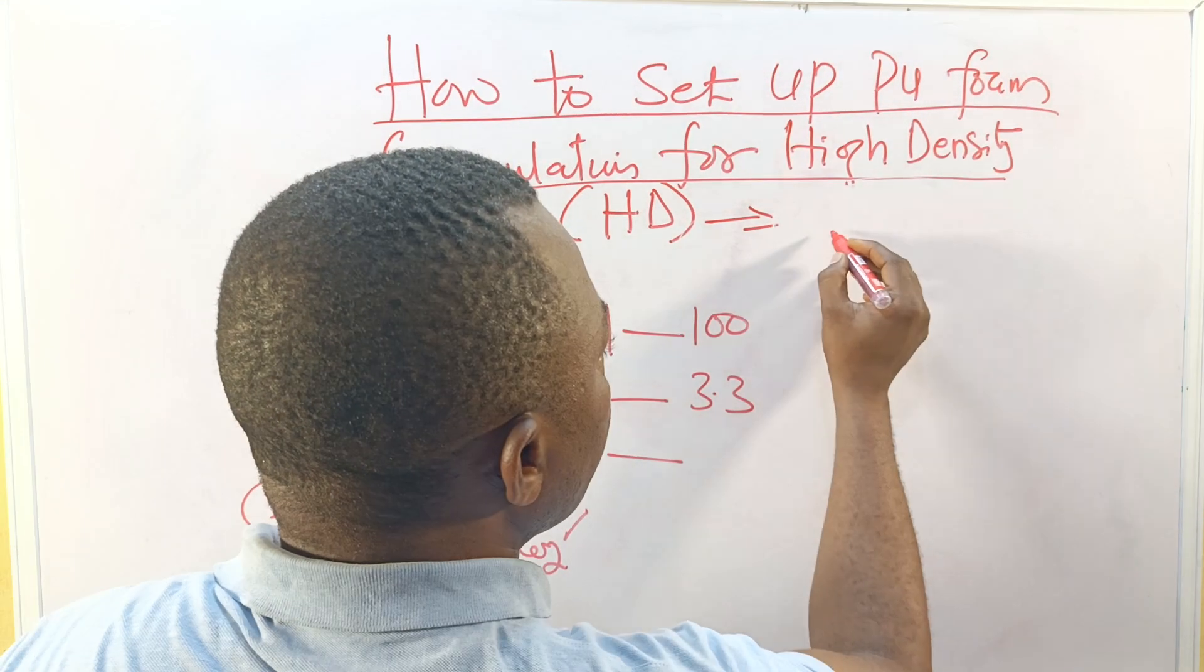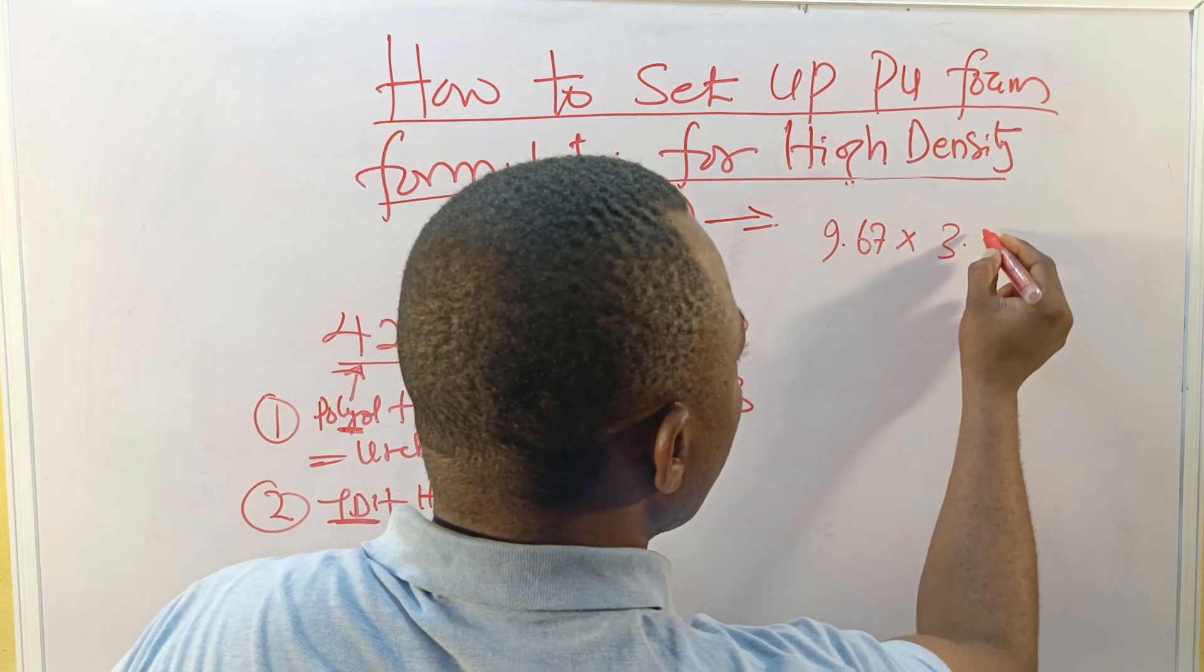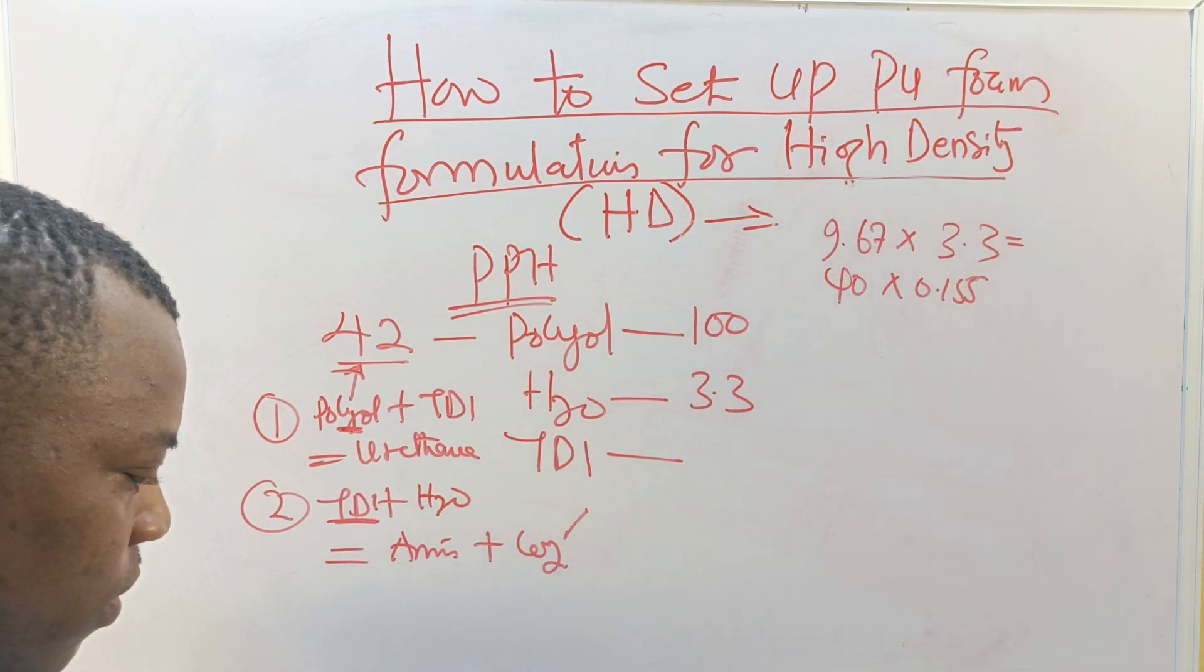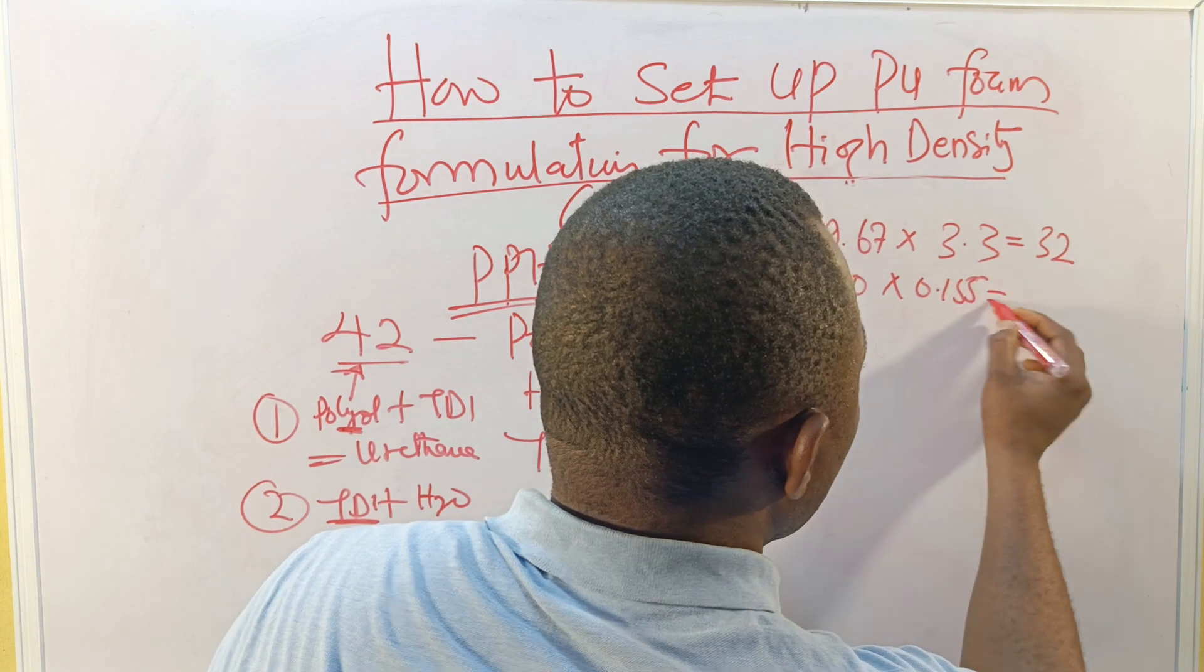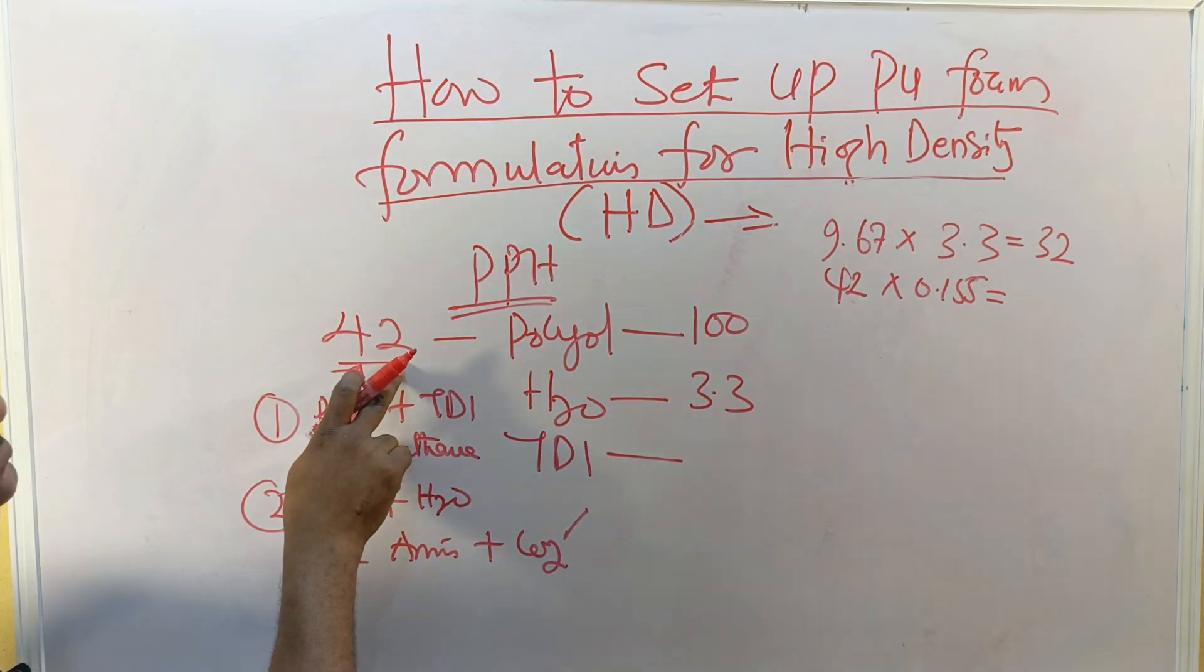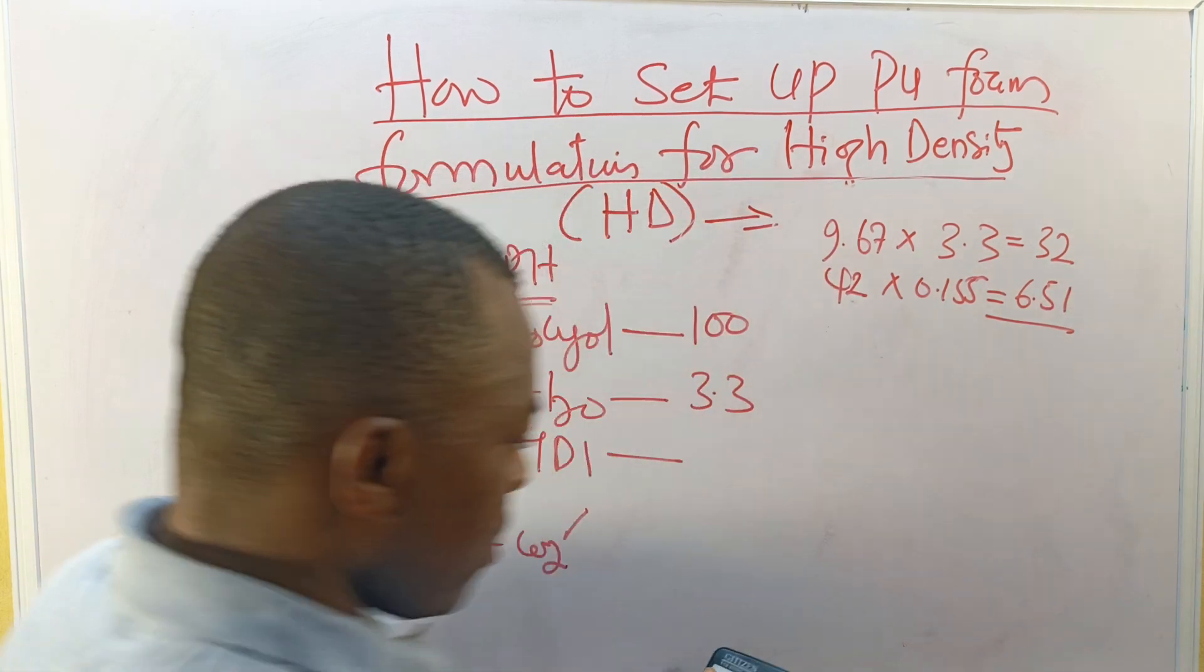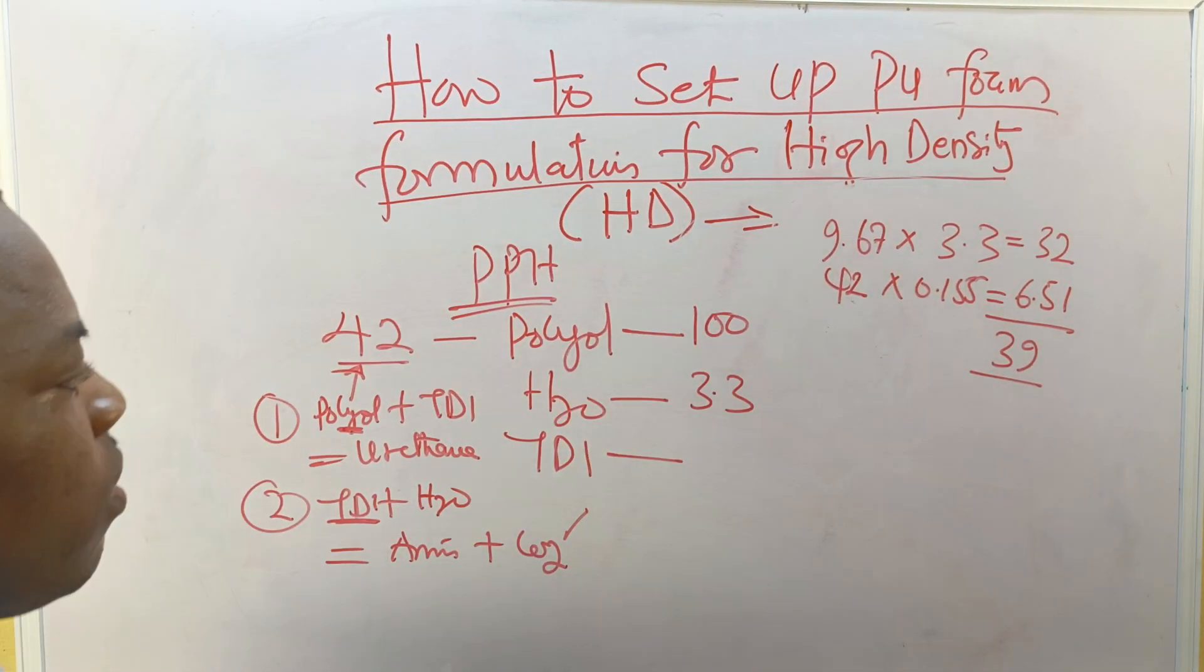In the formula we will have, remember, 9.67 multiplied by water 3.3, then we have hydroxyl value multiplied by 0.155. So in this case we have 9.67 multiplied by 3.3, then we have 32, then this one we have hydroxyl value is 42, from the manufacturer of this polyol, so 42 times 0.155 gives us 6.51.